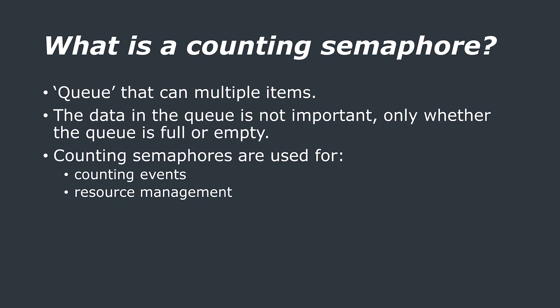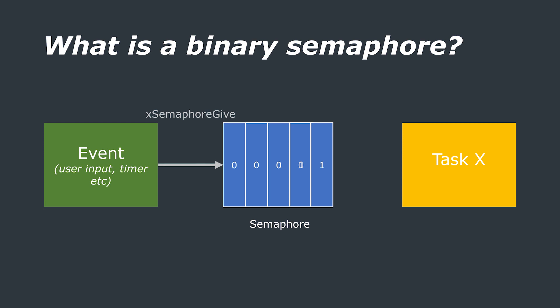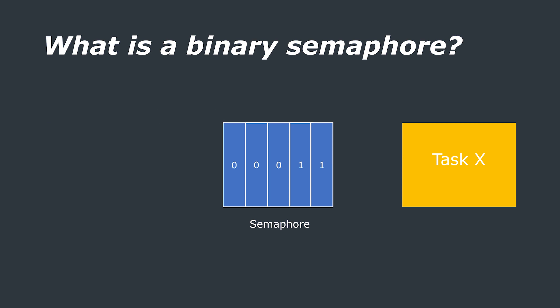Let's start with an example of a counting event. Imagine we have an event handler which gives the semaphore every time some event occurs — this increments the value of the semaphore. A handler task can then take the semaphore and process the event, which decrements the semaphore. The value of the semaphore is the difference between the number of events that have occurred and the number that have been processed. Ideally the semaphore value is kept as close to zero as possible, and this method can be effective at keeping track of events and ensuring they are all processed properly, even if there is a backlog.